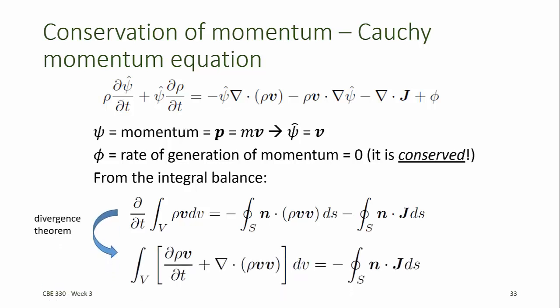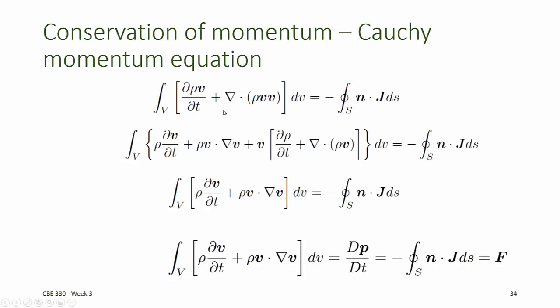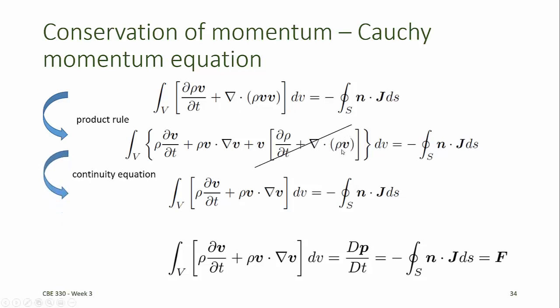By application of the divergence theorem, we can convert the advective flux surface integral to a volume integral and bring that over to the left-hand side of the equation. Expanding both of these derivatives using the product rule allows us to regroup some terms that we can identify from the continuity equation, or the conservation of mass equation. The sum of d rho dt plus the divergence of rho v is zero from the continuity equation. The quantity on the left-hand side can now be identified as the material derivative, or the substantial derivative of the momentum.